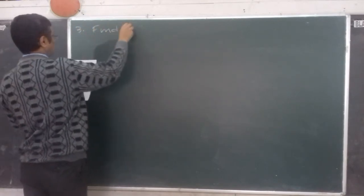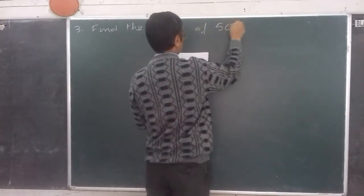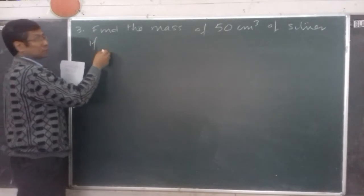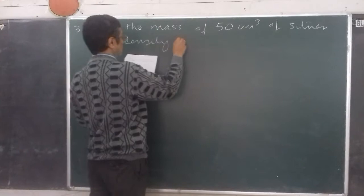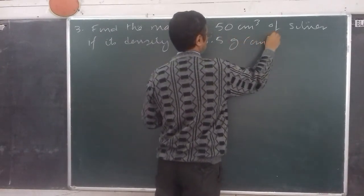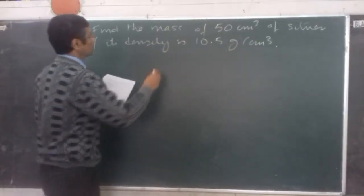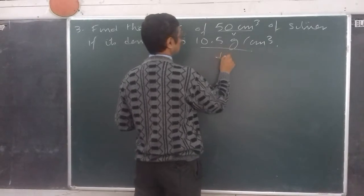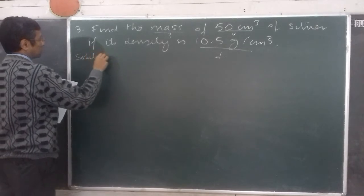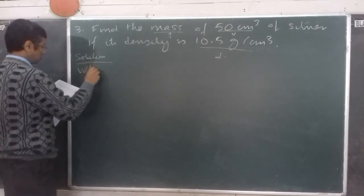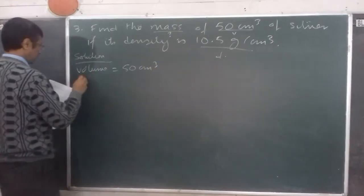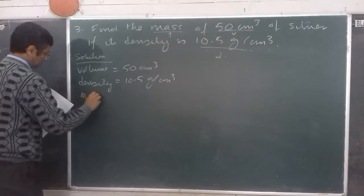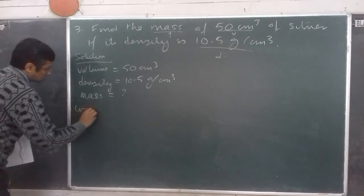Next question: find the mass of 50 centimeter cube of silver if its density is 10.5 gram per centimeter cube. In this question you have to find the mass; volume is given as 50 centimeter cube and the density of silver is given as 10.5 gram per centimeter cube. In the solution: volume is 50 centimeter cube, density is 10.5 gram per centimeter cube, and mass is what we need to find.